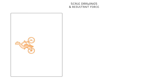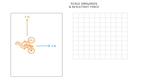Let's imagine that a man on his bike is pedalling to create a force of 4 newtons northwards. At the same time, a strong breeze is blowing him eastwards with a force of 3 newtons. We can represent this situation on a grid, where the cyclist is this orange dot, and the forces are shown as a 4cm arrow upwards and a 3cm arrow to the right, so that each newton is equal to 1cm.